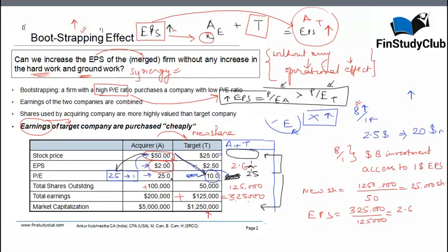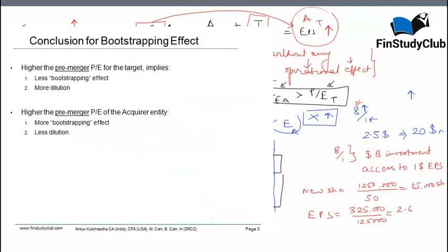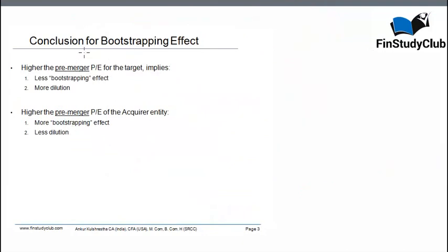I get a very important conclusion that greater the pre-merger PE of the acquirer, which is 25, in relation to the PE of the target, the greater the difference between the two, the more bootstrapping impact. You see that 2.6 versus 2, there is a significant delta of 0.6, which is almost 30%.